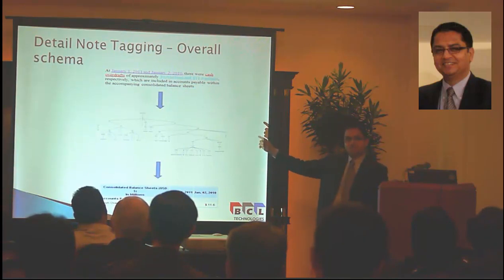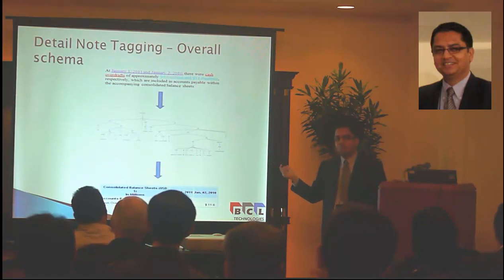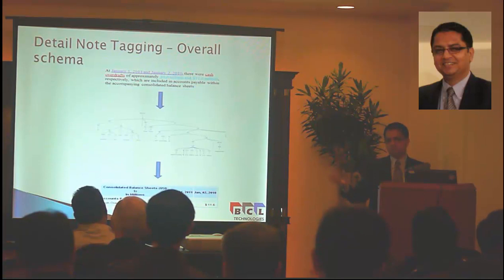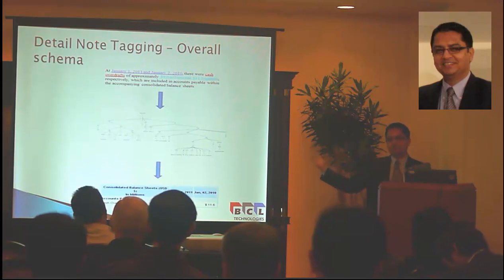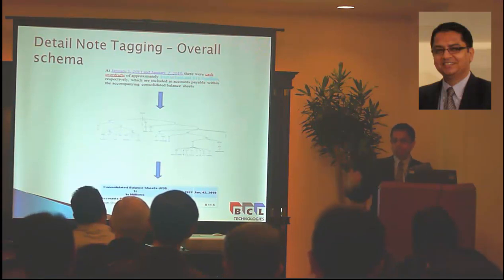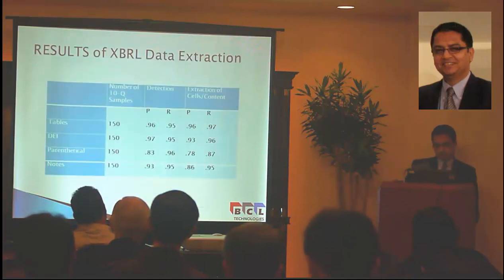We traverse the tree, find the distance, and make it a classification problem. For classification we are using two methods: the Bayesian classifier method and the support vector machine — a machine learning algorithm — where we have collected a lot of training data from 10-Q and 10-K filings. We learn from that, and then at runtime we try to detail-tag the new 10-Q file based on the trained models and parameters. That's the overall process.